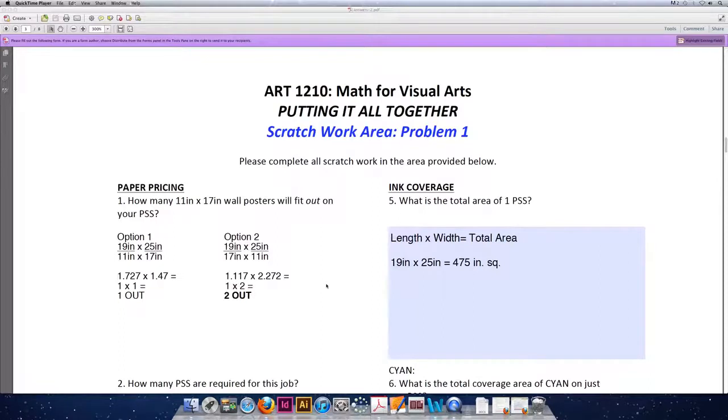So question five, the formula you want to use is the area formula, which is length times width. And our press-sized sheet is 19 by 25. So 19 inches times 25 inches is 475 inches squared or square inches.